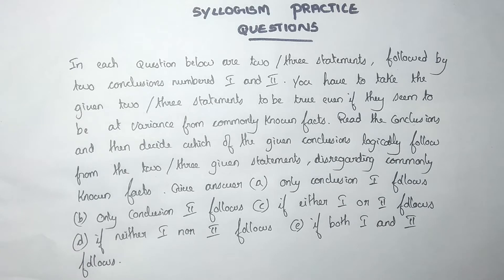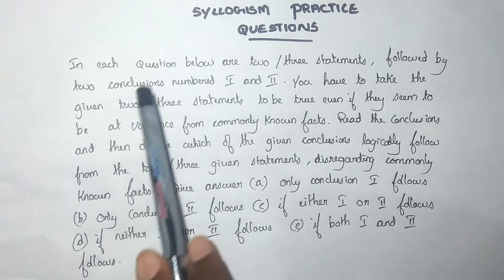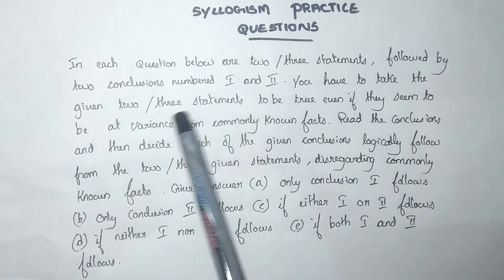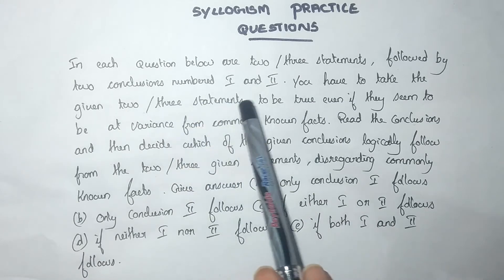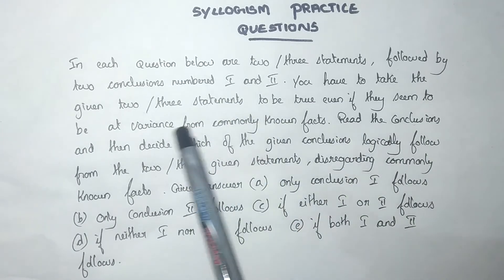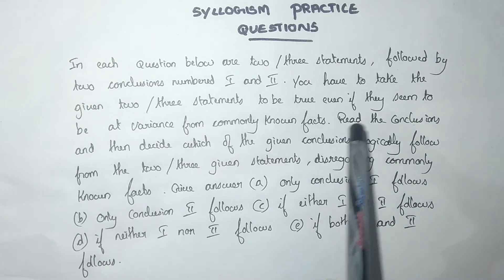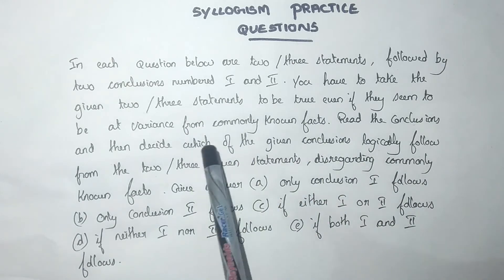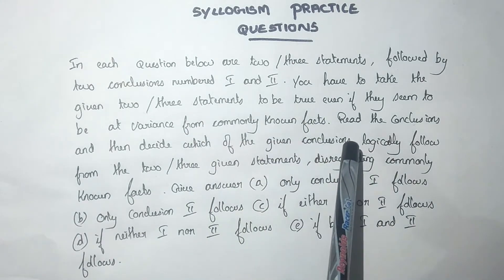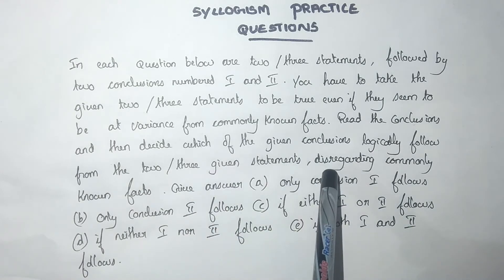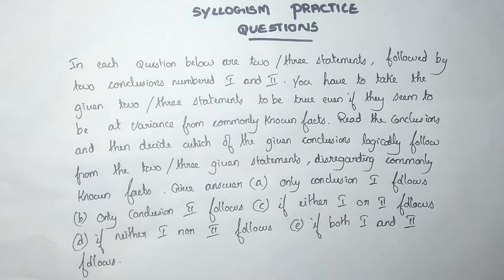The question format is: in each question below are 2 or 3 statements followed by two conclusions, number 1 and 2. You have to take the given 2 or 3 statements to be true, even if they seem to be at variance from commonly known facts. Read the conclusions and then decide which of the given conclusions logically follow from the given statements, disregarding commonly known facts.